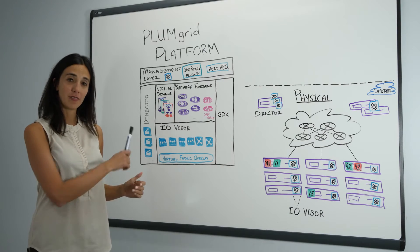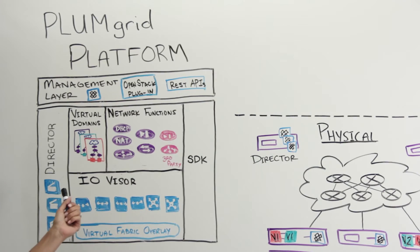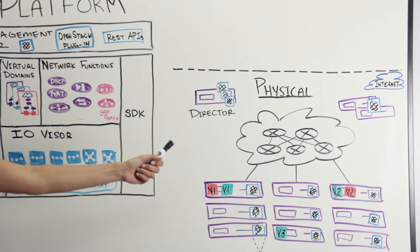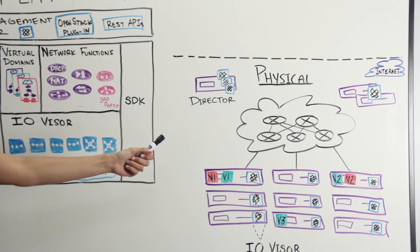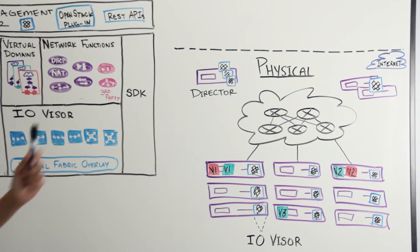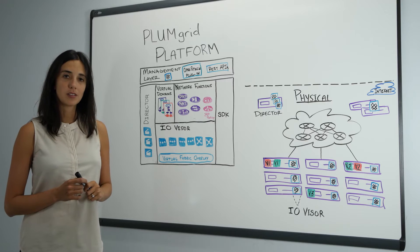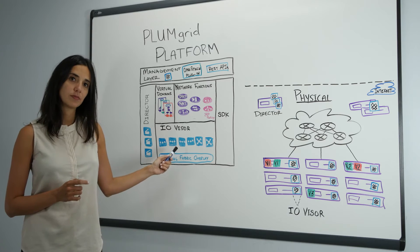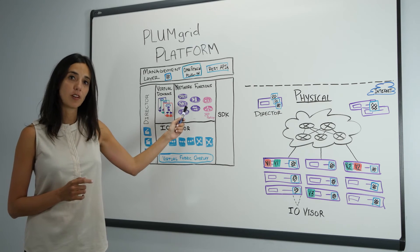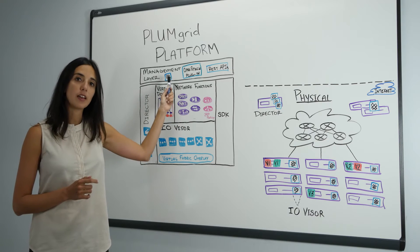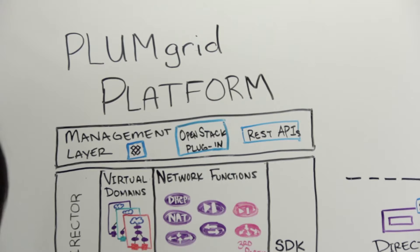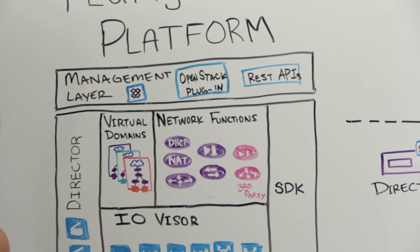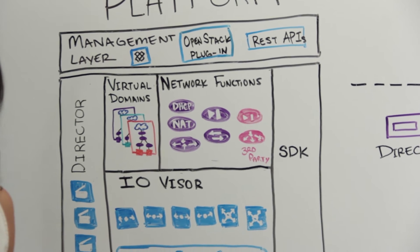On the whiteboard we have on the left-hand side a representation of the PlumGrid platform, and on the right-hand side a simplified block diagram of a data center. During this video we're going to map PlumGrid components to the physical data center layout. The PlumGrid platform has six components: director cluster, IOvisor, virtual domains, virtual network functions, management layer, and SDK. All six components play a fundamental role in making an efficient, easy-to-operate, and scalable cloud networking solution.